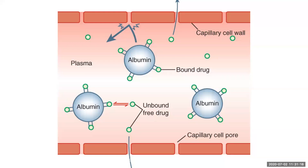Let's imagine we are looking at a restaurant, and each one of those circles that says albumin is actually a table where four people can sit to eat. These little green circles are people that want to come and eat at this restaurant. You can see that there are only 12 seats available, but we have 12, 13, 14, 15, 16, 18 little circles.